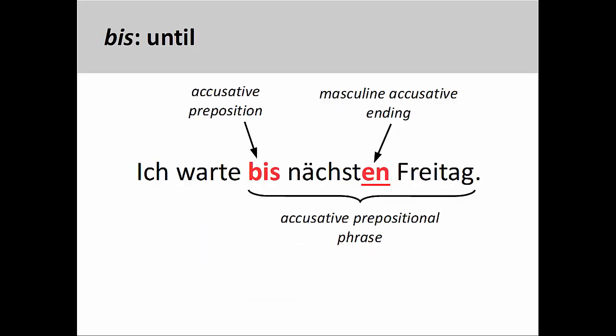Bis can be used to express until, up to a certain point in time, or by a certain point in time. For example, Ich warte bis nächsten Freitag — I will wait until next Friday. The masculine accusative ending on the adjective shows that everything between the preposition and its object is in the accusative case.